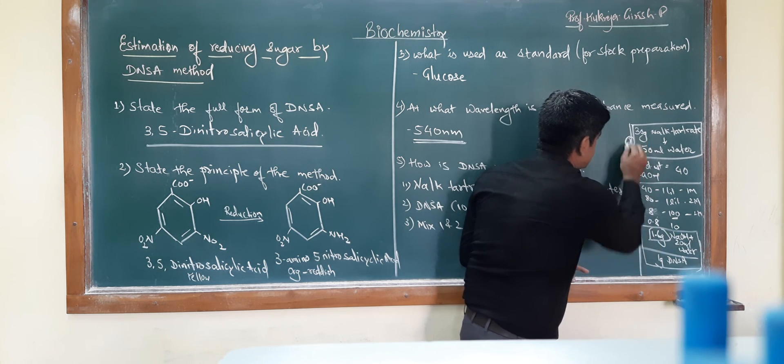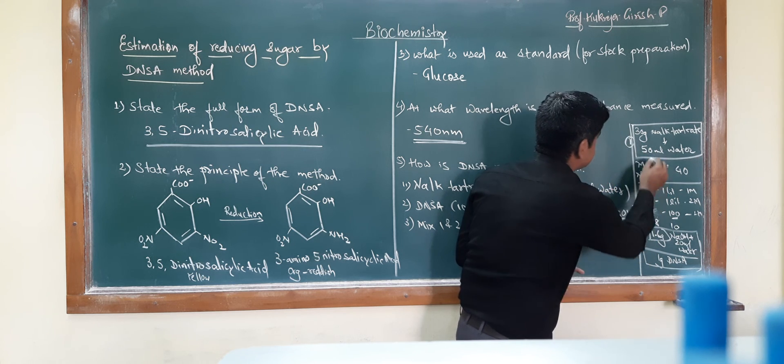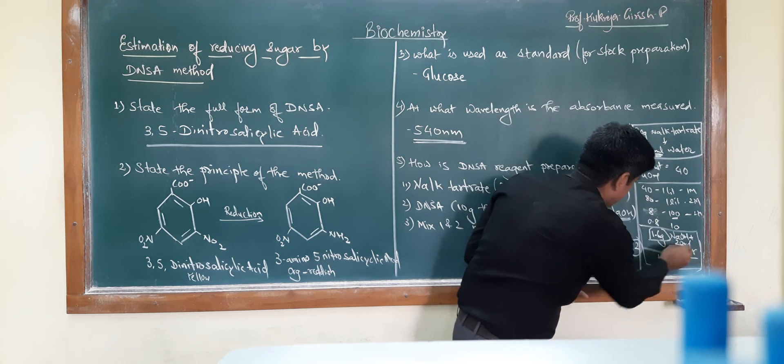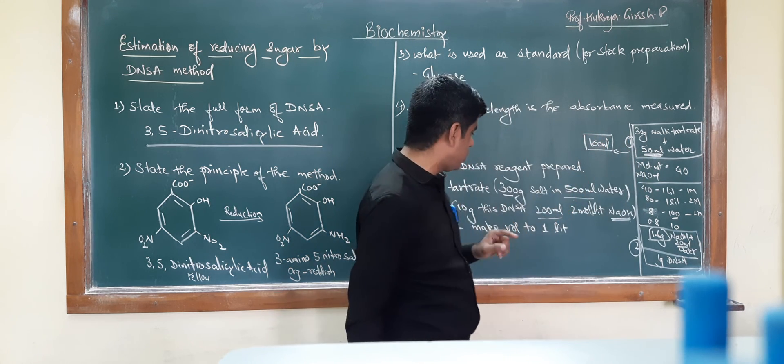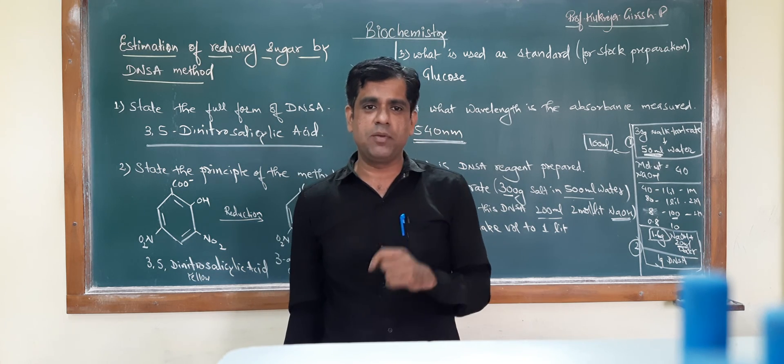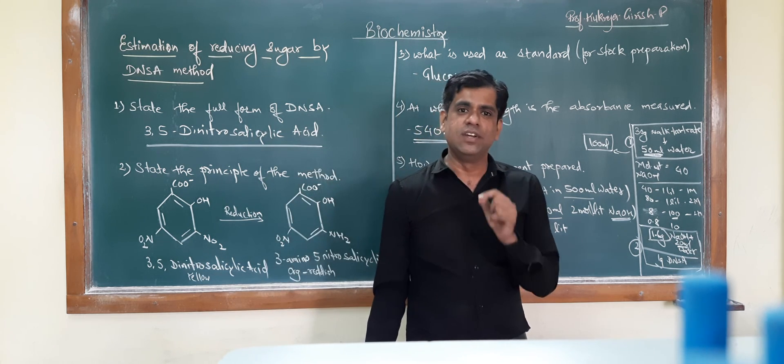Now you have solution one and solution two. This is 50 ml, this is 20 ml. Now make this volume to 100 ml. Like this, you have a 100 ml solution of your DNSA reagent. Stay tuned with us for more in microbiology and biochemistry. Thank you.